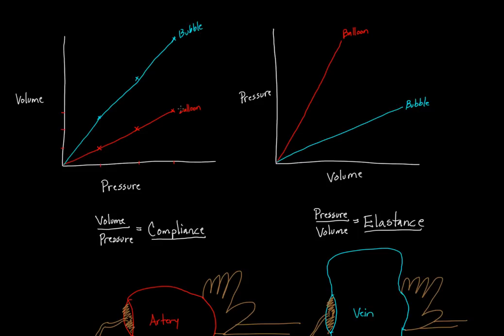So if I was to make a volume pressure loop with this, I could actually erase the word balloon and bubble, and really replace them completely with artery and vein. I could just write the words artery and vein, and essentially they would be behaving this way. Artery up here, artery over here, and then vein in the other two spots. So you can now see that the artery has lower compliance than a vein and higher elastance than a vein.